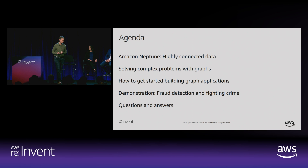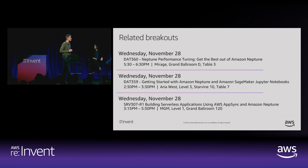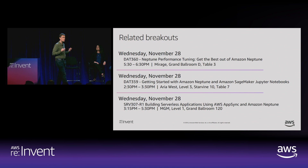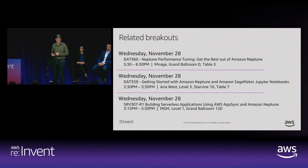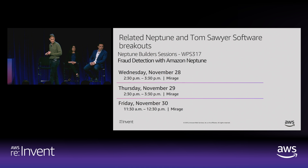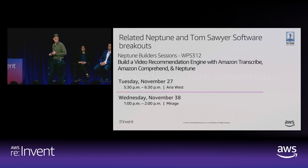There are a few related breakouts you might want to check out. For performance tuning, we have DAT360. Tomorrow there are sessions on getting started with Amazon Neptune and using SageMaker notebooks with your graph database. There's also a session on using serverless with graph databases. Tom Sawyer is presenting on building fraud detection applications with Neptune, and there's a session on how AWS AI services and graph databases can interact.